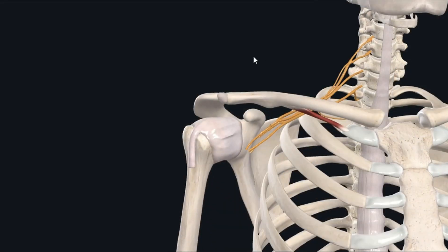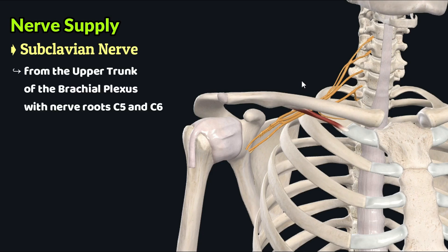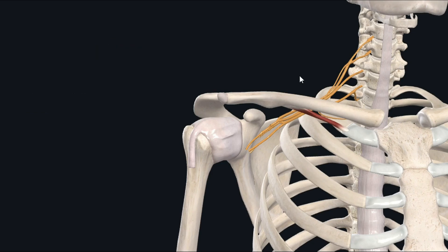The subclavius muscle is supplied by the subclavian nerve, also called the nerve to the subclavius, which originates from the upper trunk of the brachial plexus from nerve roots C5 and C6.